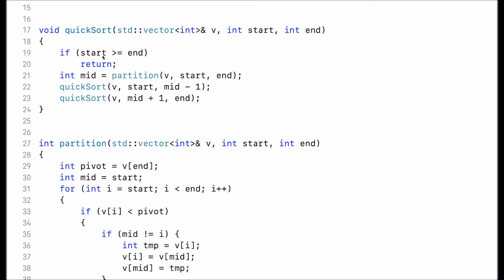Now the first condition checks if the start index is larger than or equal to the end. That ensures that the vector size that I'm considering is at least two elements. If there's a single element or less than an element, there's nothing to sort.